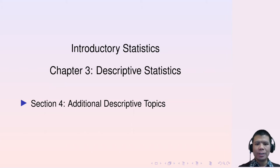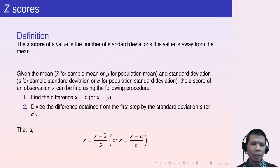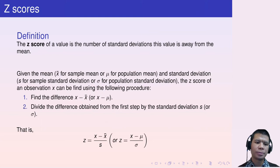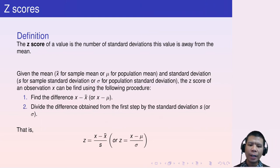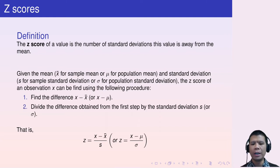The first topic we are going to cover is z-scores. So what is a z-score? The z-score of a value is the number of standard deviations this value is away from the mean.